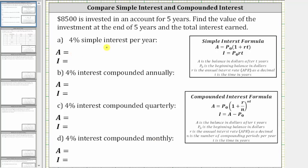The simple interest formulas are shown here, where A, the amount after time T, is equal to P₀, the initial investment, times the quantity one plus R times T, where R is the interest rate expressed as a decimal and T is the time in years. The interest earned, I, is equal to P₀ times R times T.